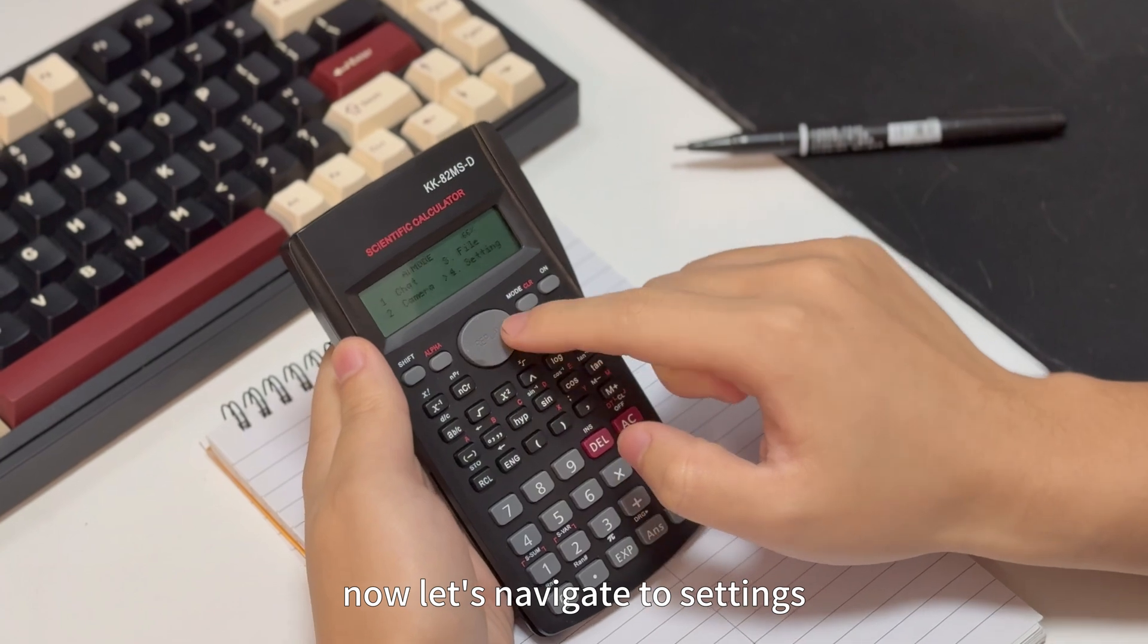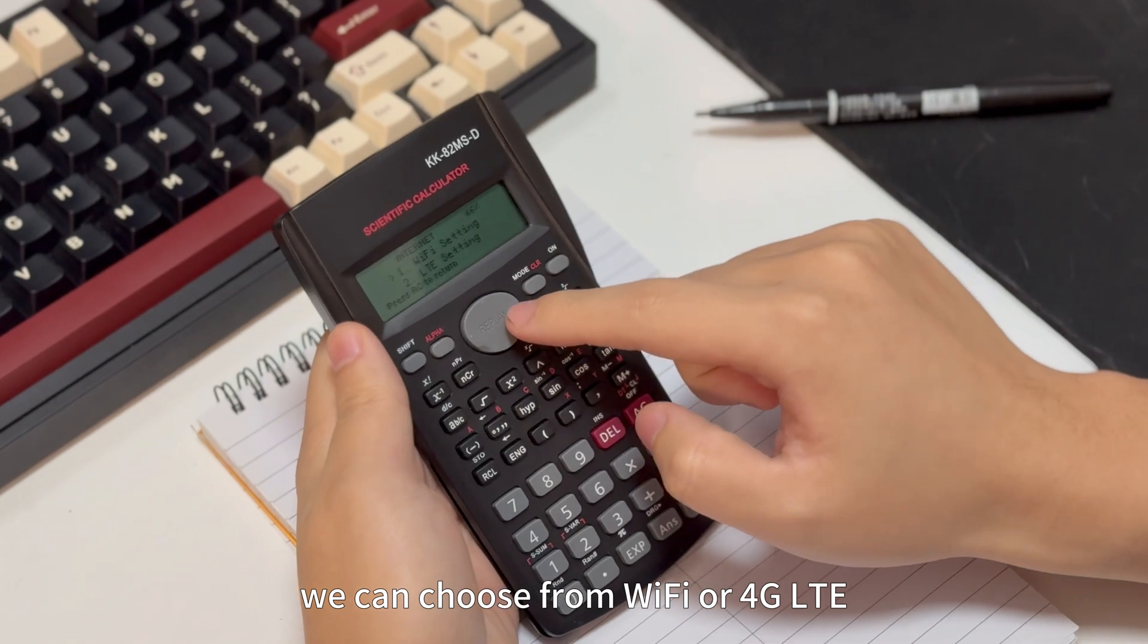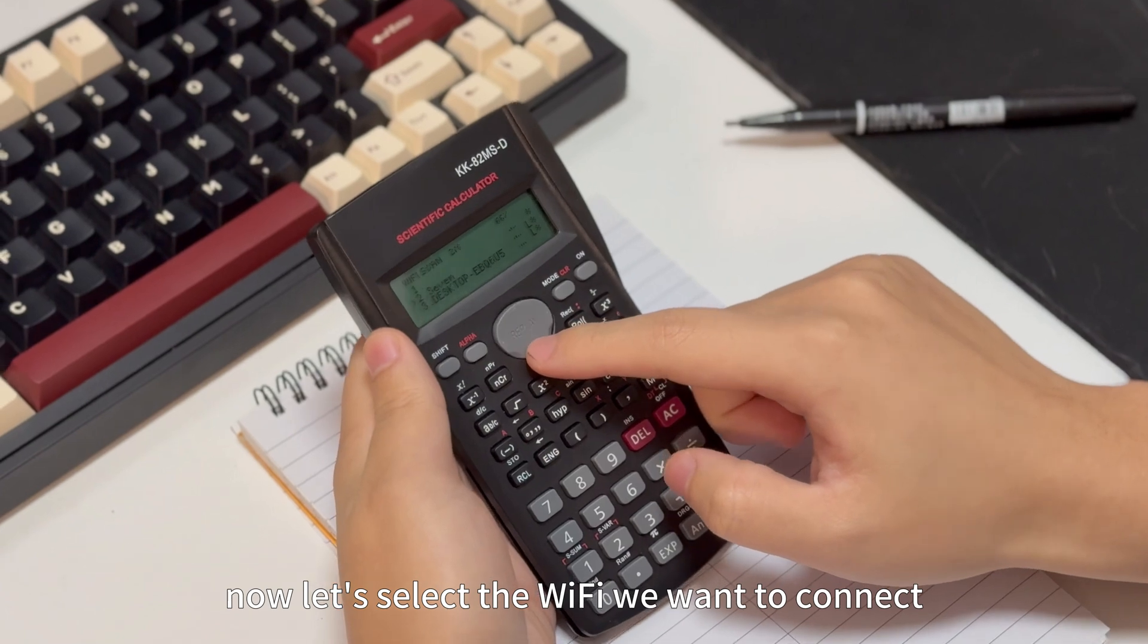Now let's navigate to setting. Click on the internet options. We can choose from Wi-Fi or 4G LTE. Click on Wi-Fi, then scanning for Wi-Fi. Now let's select the Wi-Fi we want to connect.